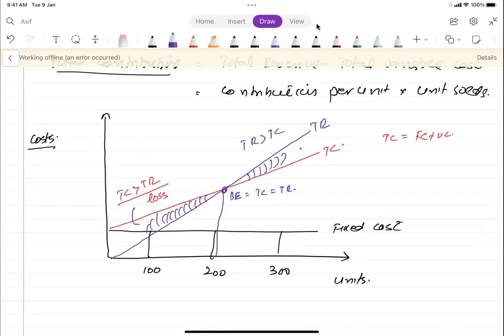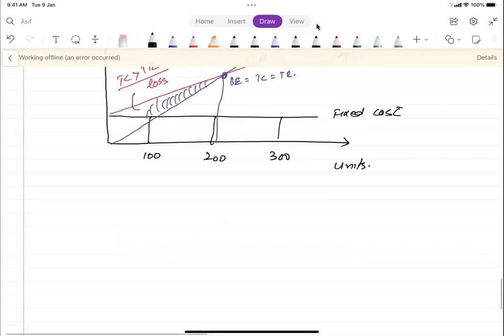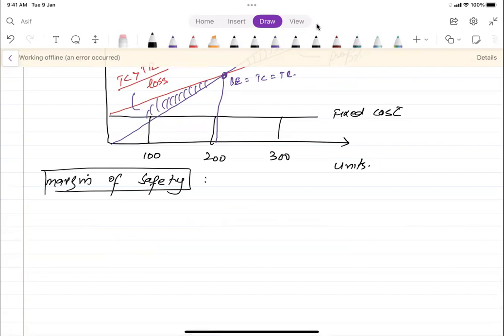This is how the break-even chart is drawn. Another concept attached with break-even is called margin of safety. Margin of safety is the difference between actual or forecasted output and the break-even output.